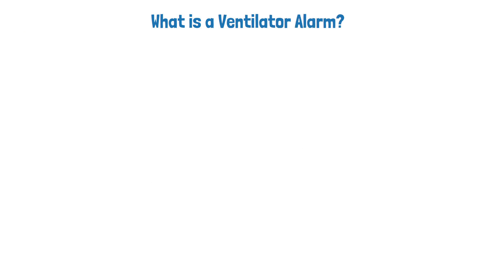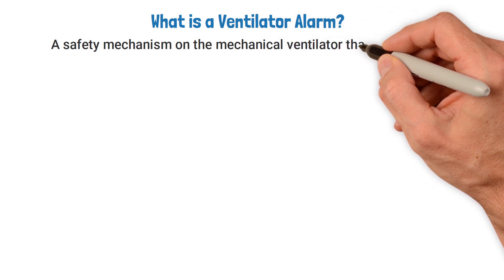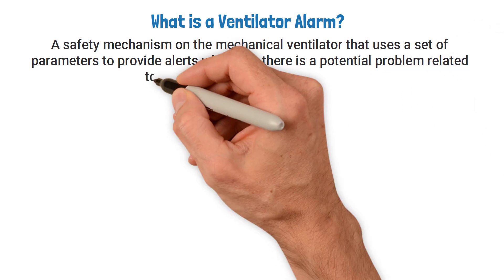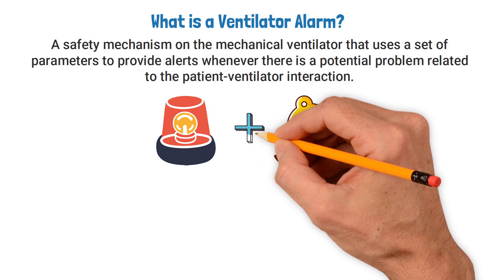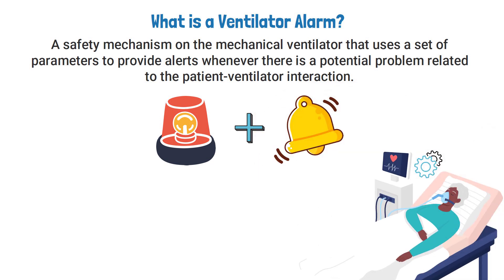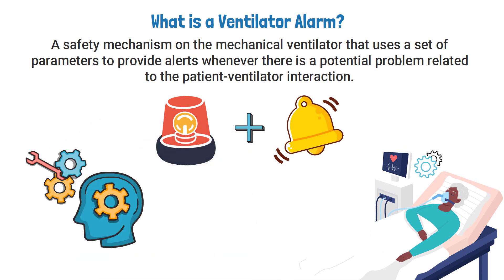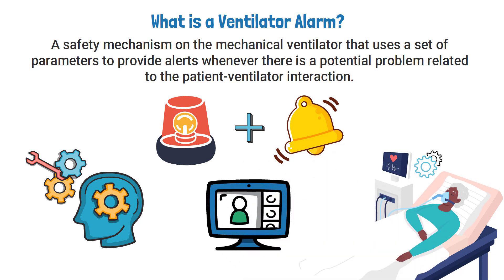A ventilator alarm is a safety mechanism on the mechanical ventilator that uses a set of parameters to provide alerts whenever there is a potential problem related to the patient-ventilator interaction. The alarms can be visual, audible, or both depending on the ventilator setting and the patient's condition. To learn each of the different ventilator alarms, you must develop an understanding of the different ventilator modes and settings, but for this video we are specifically focusing on the apnea alarm.